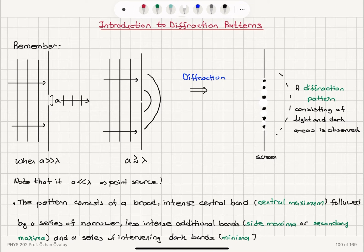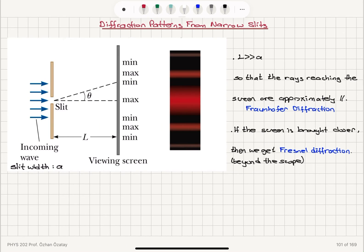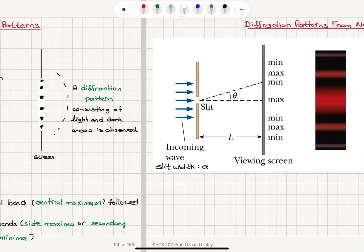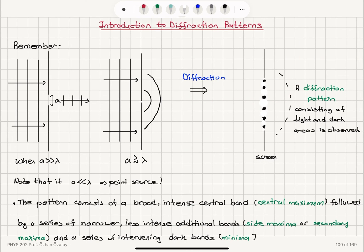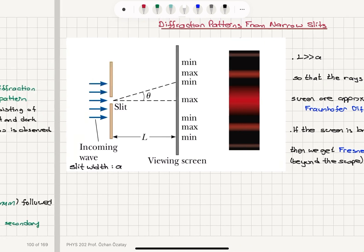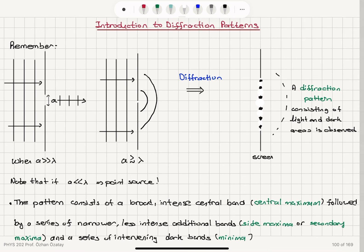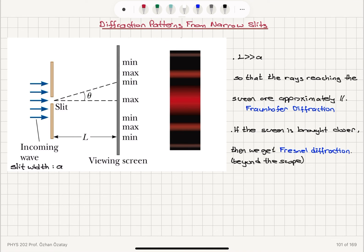To summarize, using Huygens' principle: when plane waves are incident on a slit, they may be transmitted as plane waves or spherical waves depending on the width of the opening. If the width is comparable to or greater than the wavelength, we observe a diffraction pattern. If it's much less than the wavelength, the slit acts as a point source and it's difficult to observe a diffraction pattern. The pattern consists of a broad, intense central maximum, followed by narrower, less intense secondary maxima, and intervening dark minima. We have Fraunhofer diffraction when L is much greater than A.